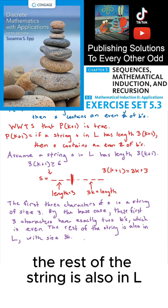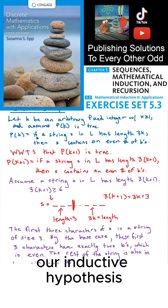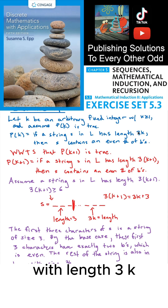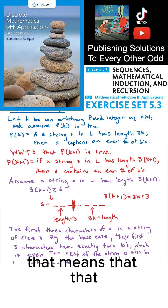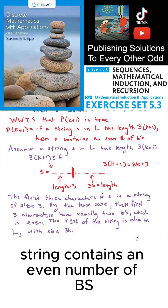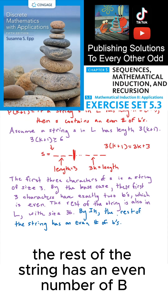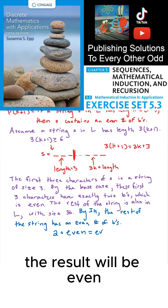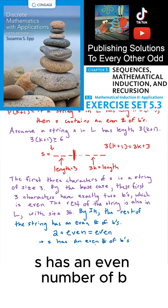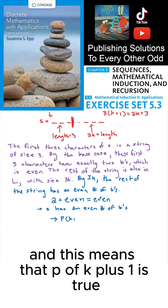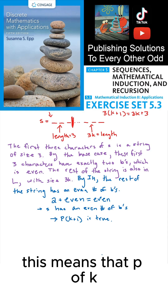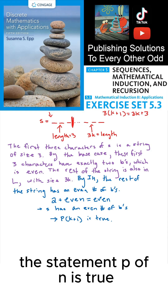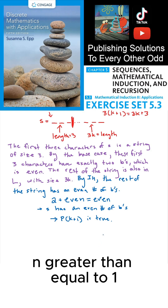The rest of the string is also in L with size 3K. Our inductive hypothesis makes a claim specifically about strings in L with length 3K — that that string contains an even number of Bs. So by the inductive hypothesis, the rest of the string has an even number of Bs. Now if we take 2 and add it to an even number, since both are even, the result will be even. So S has an even number of Bs, which means P of K plus 1 is true. Since P of K implies P of K plus 1, by mathematical induction, P of N is true for all integers N greater than or equal to 1.